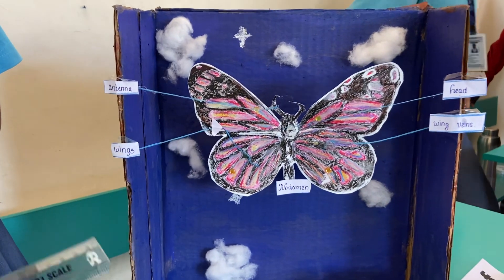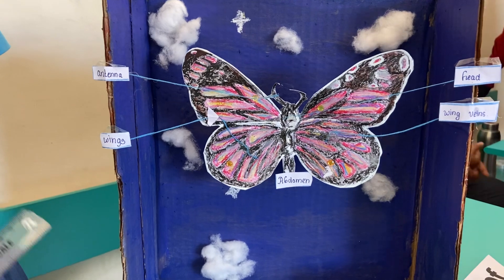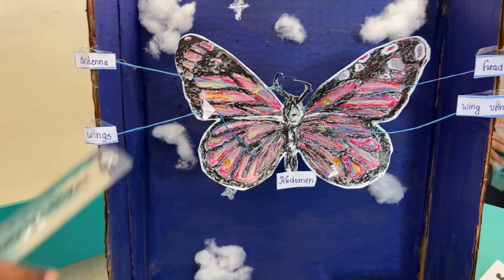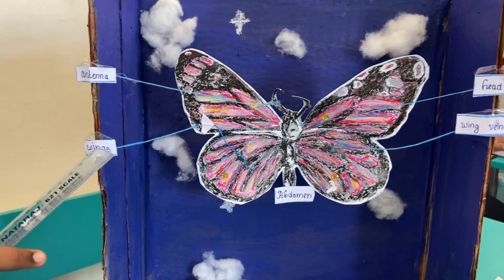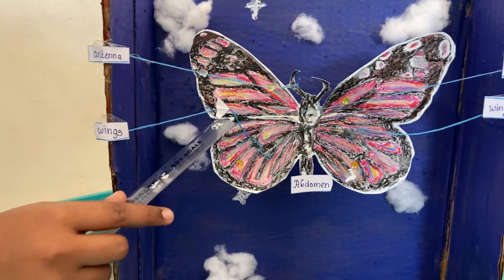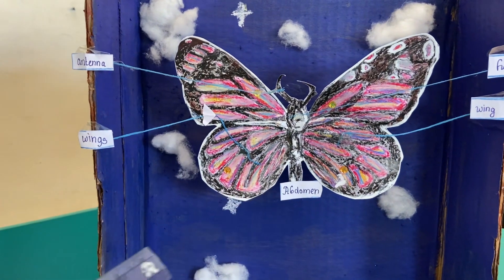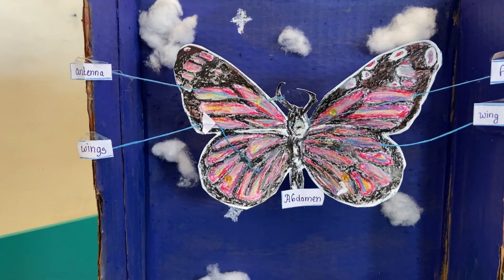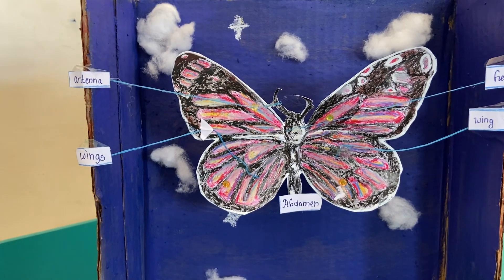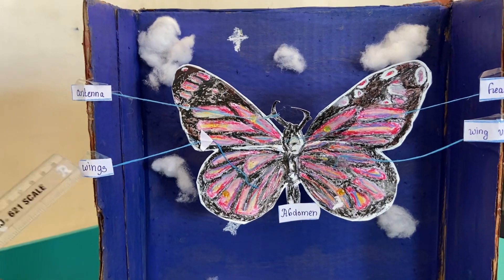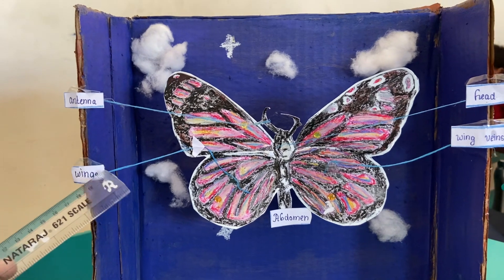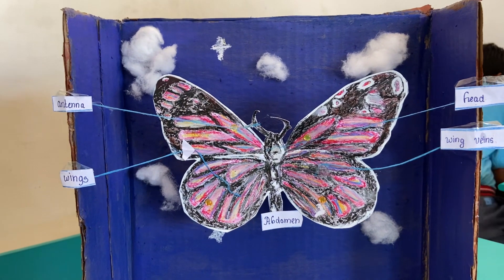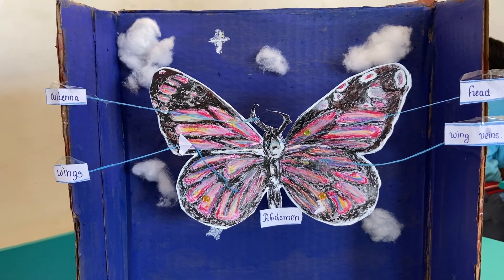The butterfly consists of one pair of antenna. Then the wings. The wings of the butterfly are the most colorful and attractive part of the butterfly. Its main function is to camouflage from the predators.